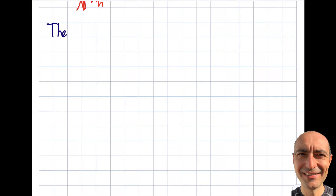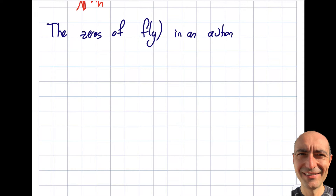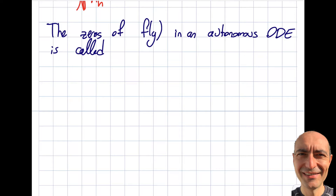The zeros of f(y) are particularly important in an autonomous ODE.